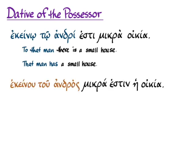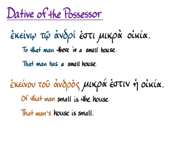The much more common genitive of possession — 'of that man small is the house,' or in better English, 'that man's house is small' — is answering much more the question of who has something, whereas the dative of the possessor is what Greek chooses when we're asking what somebody has. It's not a particularly strong distinction; the two things overlap in meaning, and you will of course see the genitive of possession much more often. But now you know this is an option when you see a dative, particularly with the verb 'to be' or some other state-of-being verb, and none of the other more common uses of the dative are working in the context you're reading.